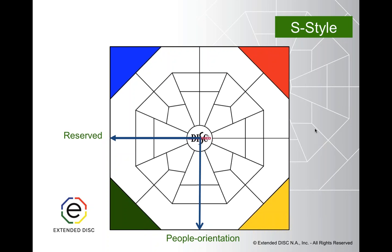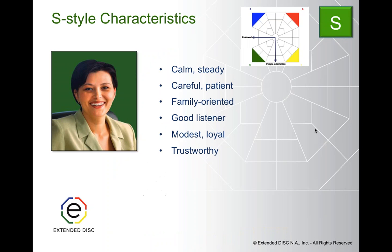S's, like I's, are people-oriented. They like people, but because they are reserved, they like people they know — friends, family, and sometimes even co-workers. They are all about relationships. So Hallie, take us through the S.